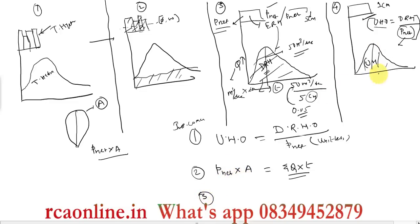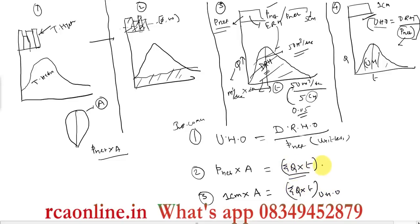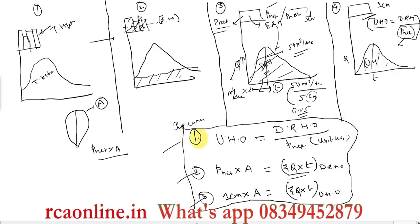From the fourth step of the process flow diagram, for the unit hydrograph: 1 centimeter of rainfall occurring over catchment area A equals the summation of Q × t for unit hydrograph ordinates. Similarly, for direct runoff hydrograph ordinates: P_net × A = summation of Q × t for DRH ordinates. All three relationships are very important and can be used to solve many problems.